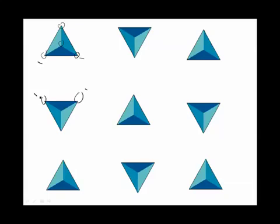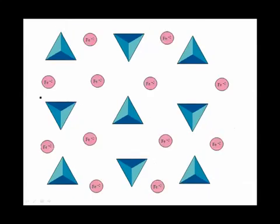That means these tetrahedron are all negative, so they would repel each other. How do we keep a silicate from self-destructing? We can glue it together with cations.